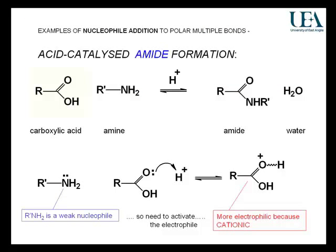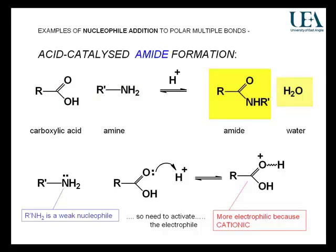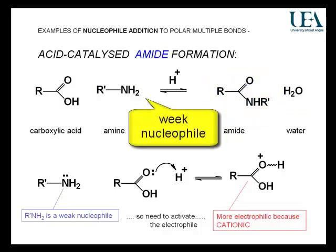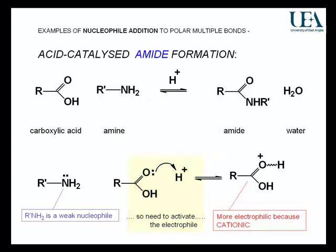So overall reaction: carboxylic acid and an amine — I've chosen a primary amine for this example — producing the amide and a water molecule. We're going to use the amine as a nucleophile. It's neutral and a relatively weak nucleophile, so we're going to need to activate our electrophilic center.